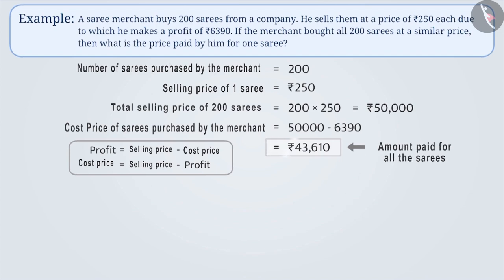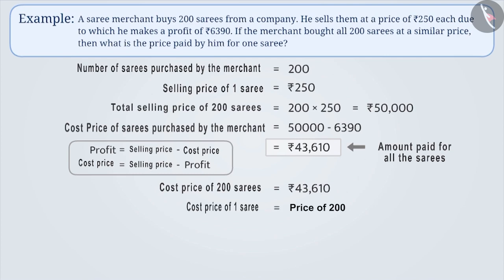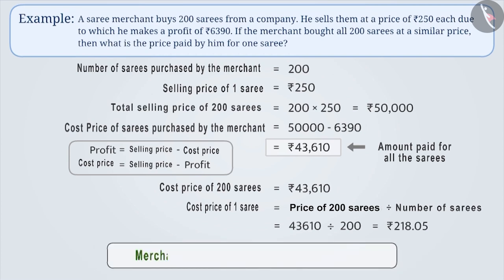Therefore, the merchant has paid Rs. 43,610 for all the sarees. If the cost price of all 200 sarees is Rs. 43,610, then the cost of one saree is equal to 43,610 divided by 200, which is equal to Rs. 218.05. Therefore, the merchant purchased each saree for Rs. 218.05.